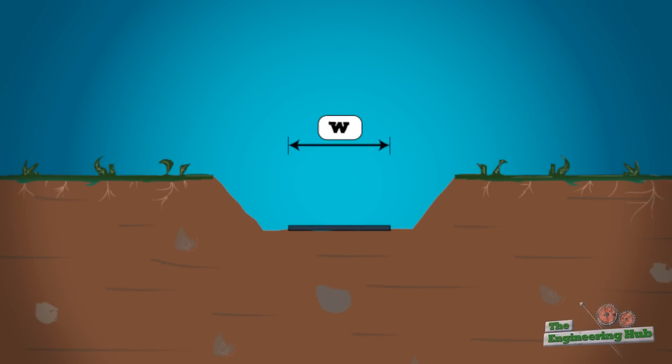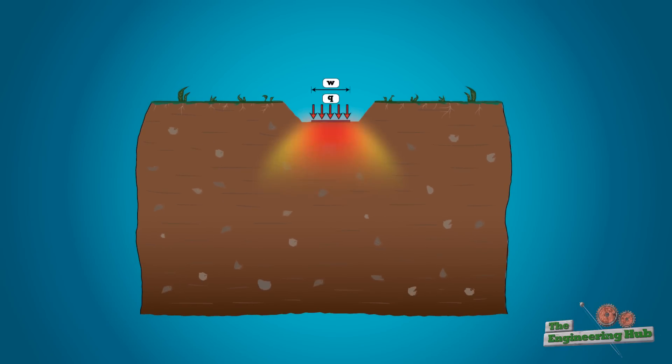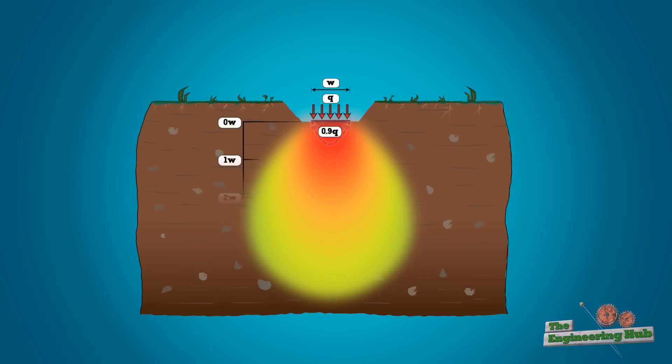To be able to understand what went wrong, we need to understand what happens under the plate as it's being loaded. The vertical stress radiates under the foundation with the load decreasing in value as it goes deeper. This makes sense since, as the load travels deeper into the ground, it is carried by a larger area.